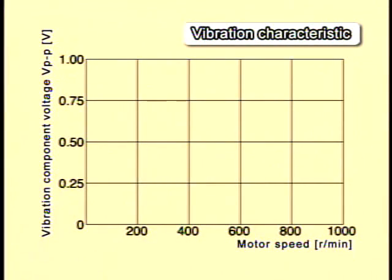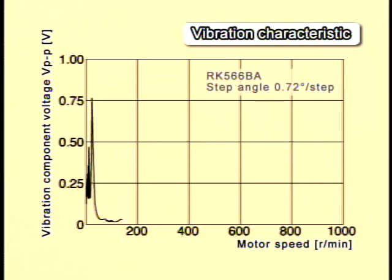The chart of vibrational characteristics shows the motor speed on the horizontal axis and the vibration component voltage produced at this time on the vertical axis. You can see the vibration decreases as the motor speed increases.